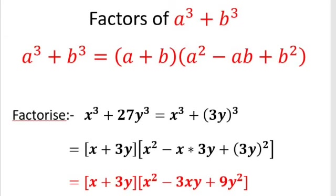Let us factorize x³ + 27y³. Let us assume x³ as a and 27y³ as b. Now a + b — what is a here? x³, so we take the cube root of x³, which is x. And what is b? 27y³. The cube root of 27 is 3, and cube root of y³ is y. So 3y. So a + b becomes x + 3y.